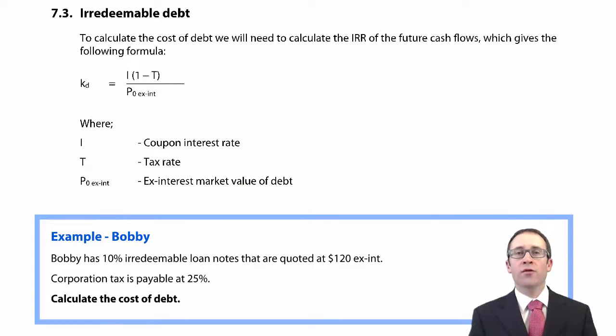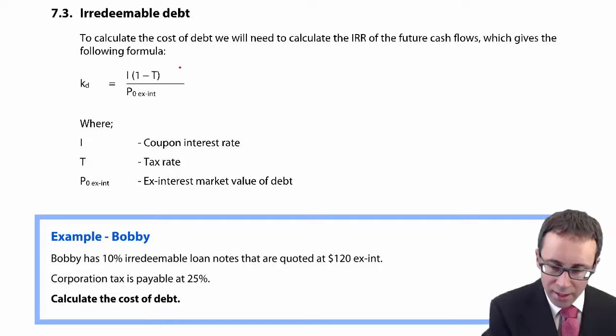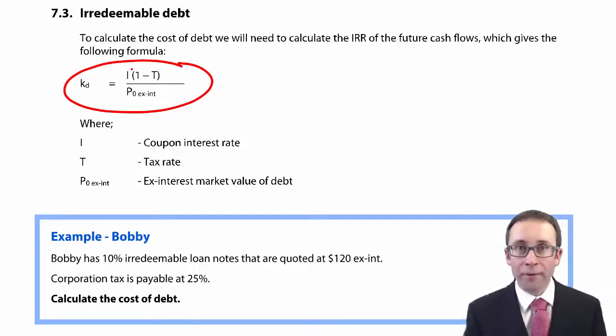We're now going to look at irredeemable debt, the first of our three areas of tradable debt that we need to calculate KD. We'll save redeemable debt and convertible debt until later. Irredeemable debt is probably the easier of the three, and the only reason is because you have a formula.